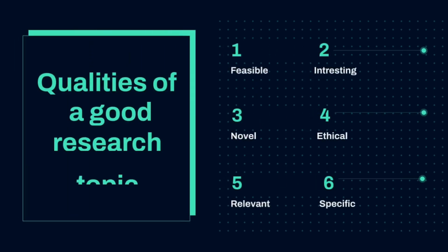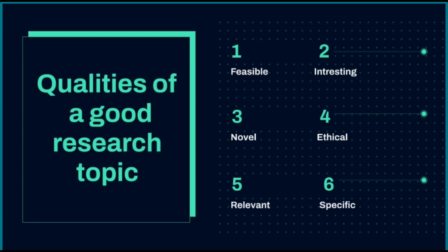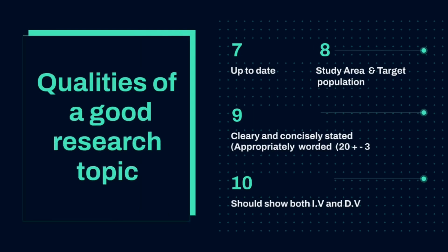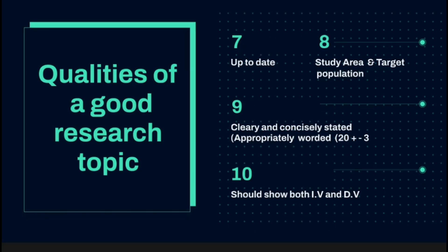The FINER qualities — feasible, interesting, novel, ethical, and relevant — all apply to a research topic. Additionally, a research topic is supposed to be specific: you will not talk about non-communicable diseases broadly but choose a specific area such as diabetes mellitus. Similarly, you cannot use chronic diseases as a topic without dissecting and choosing one, for example asthma. A research topic should also be up-to-date; for example at UNIMEB, a research problem should not be older than 10 years.